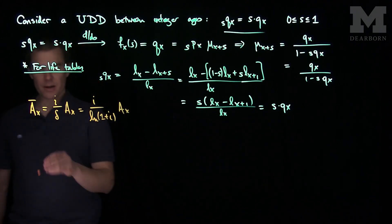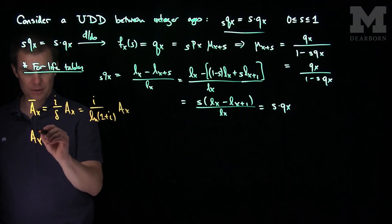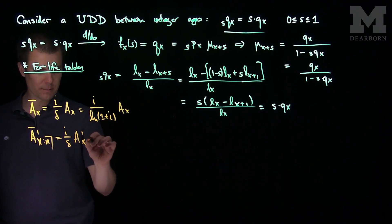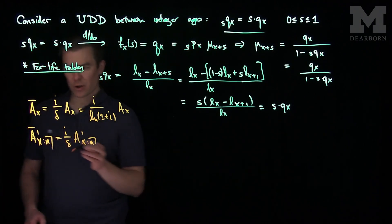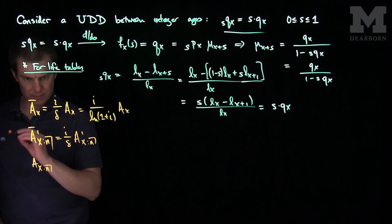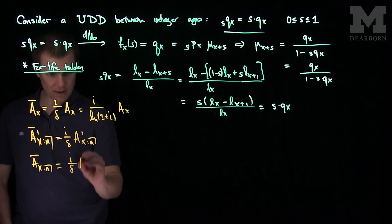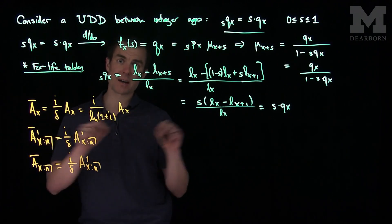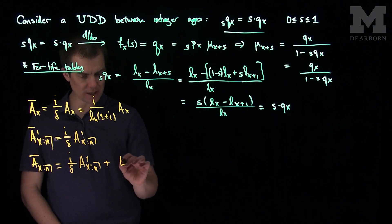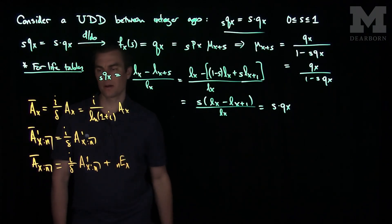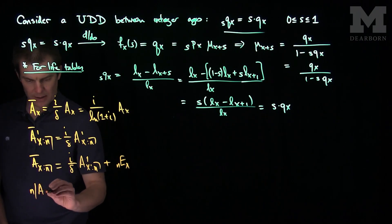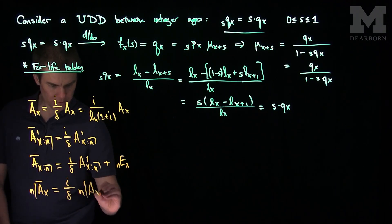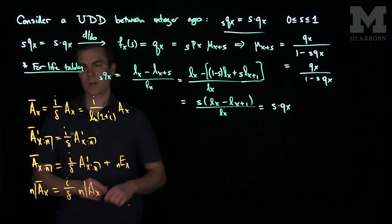We have the same thing for term insurance: continuous term equals (i over delta) times regular term insurance. For endowment insurance something changes — we have (i over delta) times A_{x:n|}^1 for the term part, but the pure endowment occurs at a particular moment of time so it is not affected by the continuous distribution, and we just add on the pure endowment n*E_x. Finally for deferred insurance, n|A_x continuous equals (i over delta) times the ordinary deferred insurance.